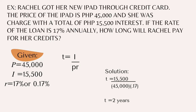Solution: 5,000 divided by 20,000 times 3 equals 0.08. Our last example: Racial got her new iPad through credit card. The price of the iPad is 45,000 and she was charged with a total of 15,500 interest. If the rate of the loan is 17% annually, how long will Racial pay for her credits? The given: principal is 45,000, interest is 15,500, rate is 0.17. The formula is T equals I divided by P times R. Solution: 15,500 divided by 45,000 times 0.17 equals 2 years.